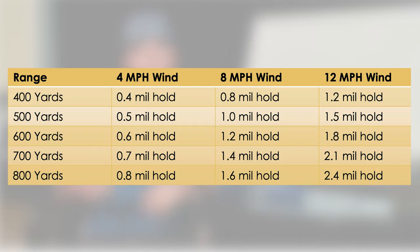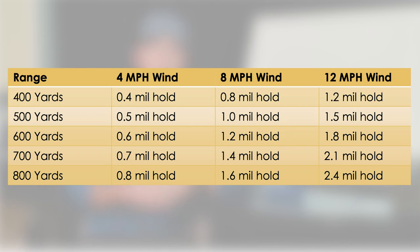At 12 mph I would hold 1.5 mils, because it's 0.5 mils every 4 mph. That will all change based on what you see for your Quick Wind once you calibrate it. The core concept: your range is your wind call every X amount of miles per hour — it was made to be quick and fast.